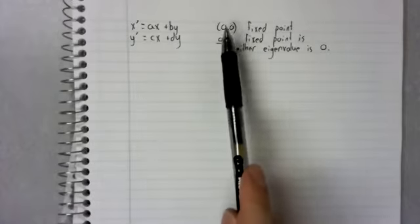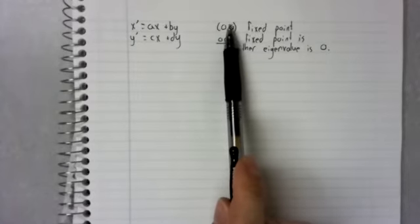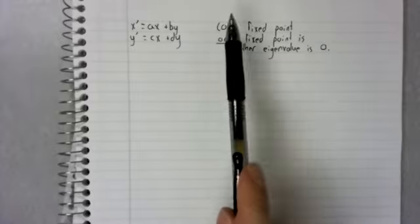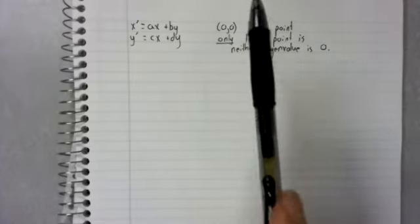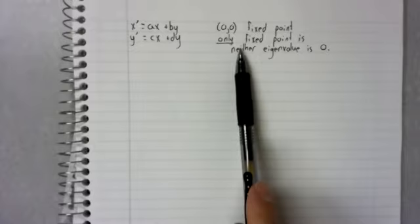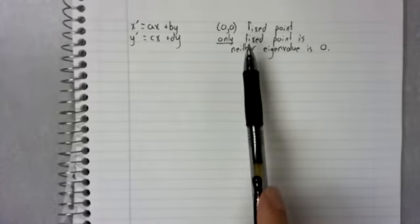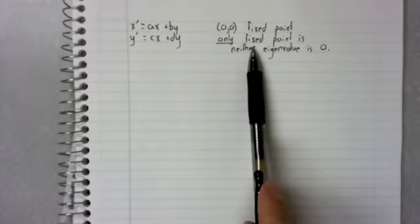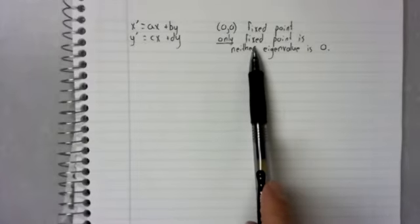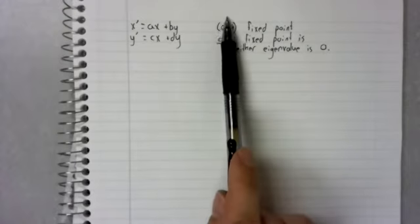This system has a fixed point at the origin, which we'll now look at, assuming that none of the eigenvalues are zero. This is the only fixed point. We'll make this assumption and consider its stability.